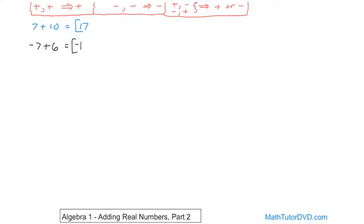What if you have 15 plus negative seven? Again, you have mixed signs, so the first thing we know is we have to subtract. You ignore the negative sign and do 15 minus seven, which gives you eight. Now you pick the sign — positive 15 has a bigger absolute value than negative seven, so it takes the sign of the larger number, and the answer is positive eight. In fact, 15 plus negative seven is really the same thing as 15 minus seven.